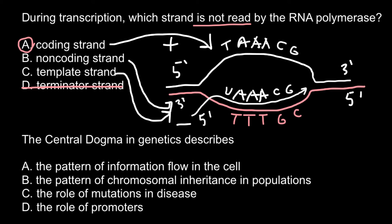Next question: the central dogma in genetics describes — and here are four answers. Answer A: the pattern of information flow in the cell. Answer B: the pattern of chromosomal inheritance in populations. Answer C: the role of mutations in disease. Answer D: the role of promoters.